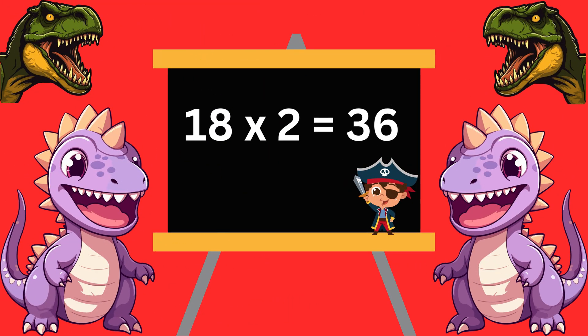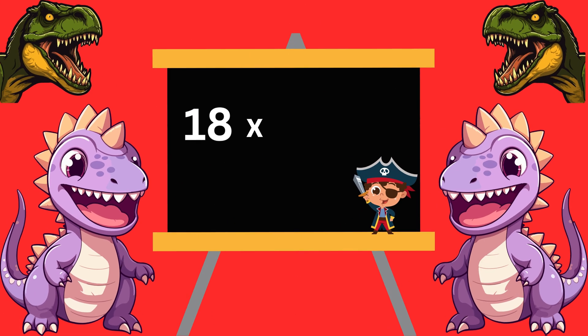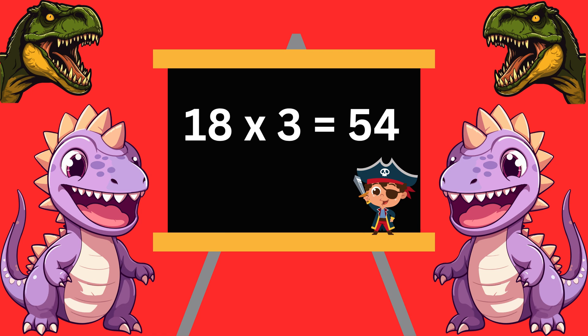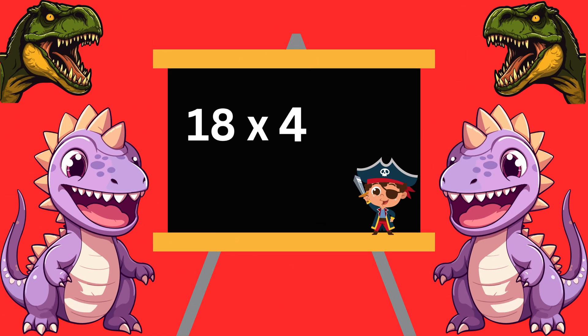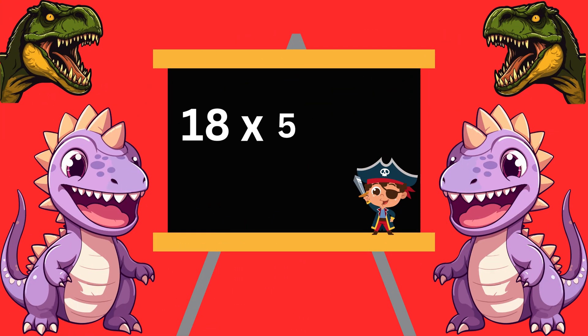18 2s are 36. 18 3s are 54. 18 4s are 72. 18 5s are 90.